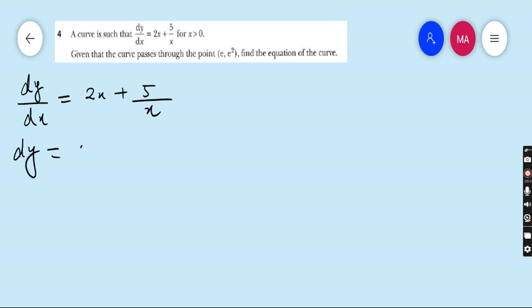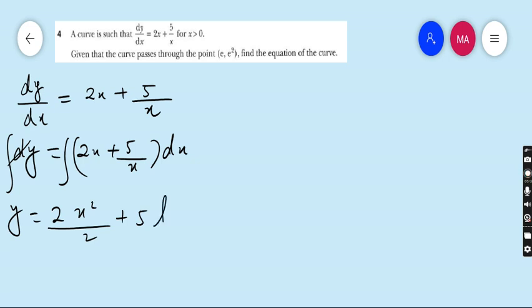dy is equals to 2x plus 5 upon x dx. Integrate both sides. It is y. 2x integration is x square upon 2 plus 5, 1 upon x integration is ln x. So y is equals to 2 cancel by 2, x square plus 5 ln x plus c. Don't forget to put plus c.